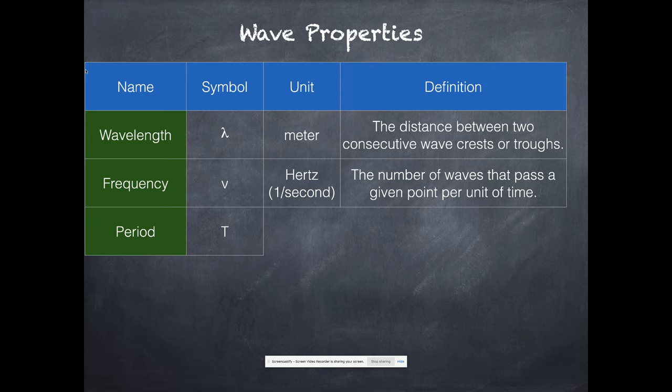Now the period is given the symbol capital T. It's measured in seconds. And it's the time between two consecutive waves. So it's a time thing. That's why the capital T makes sense. We won't deal with period too much in this class.